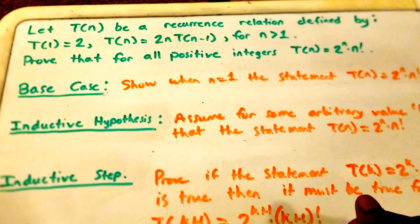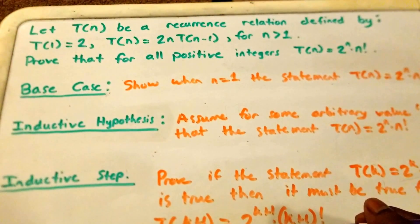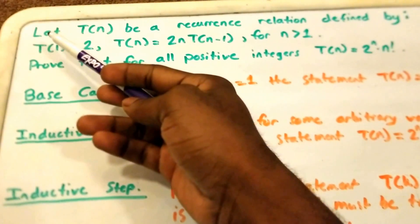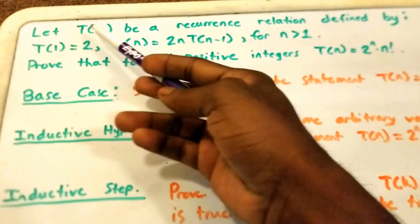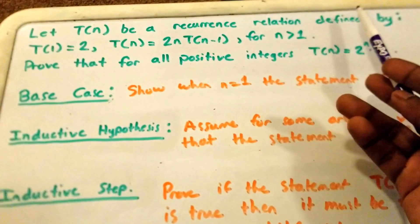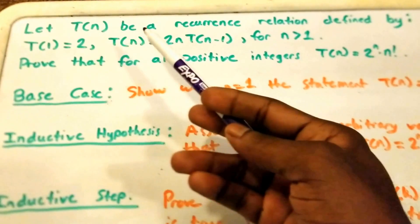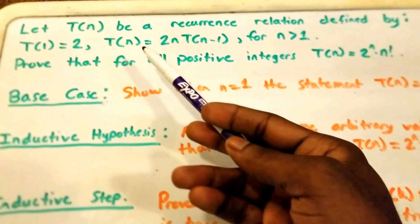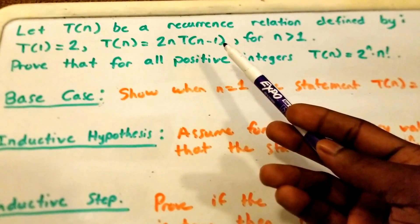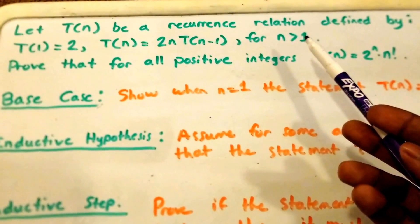Hey guys, welcome to this video on recurrence relation and proof by induction. Here we have our problem. It states: let T of n be a recurrence relation defined by T of 1 equals 2, and T of n equals 2 times n times T of n minus 1, for all values of n greater than 1.